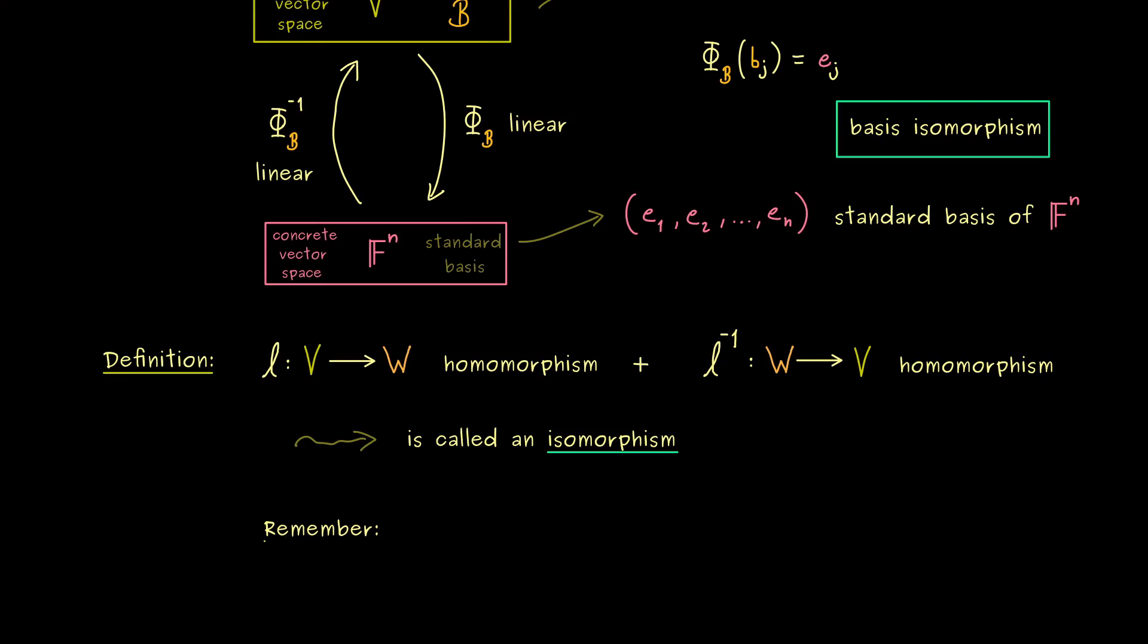Because then, as we have stated before, the linearity in the other direction is already given. So you see, this fact makes isomorphisms in linear algebra really easy.